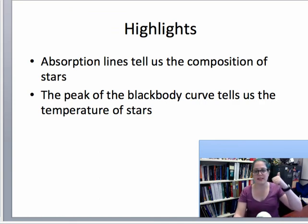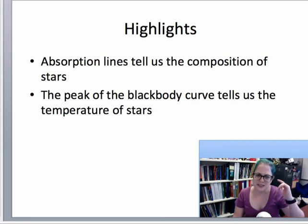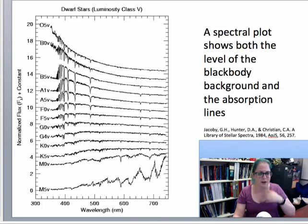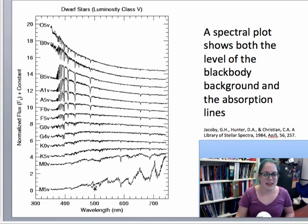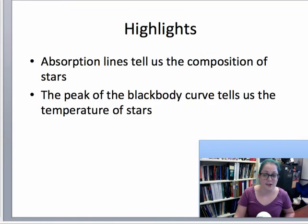So the highlights for this, absorption lines tell us the composition of stars. The peak of the black body curve tells us the temperature of stars. And if you are an astronomer that does this a lot, you can get a rough estimate of the temperature just by looking at where the lines are. But that takes a whole lot of practice to do. Primarily we're going to use that in this course, use the lines to tell us the composition, not the temperature. All right, I will see you on the discussion boards. Yes, see you there.